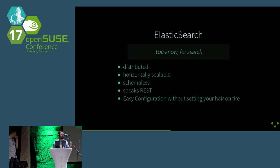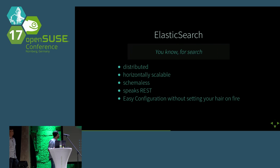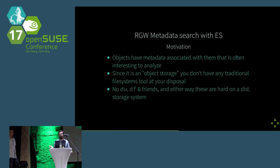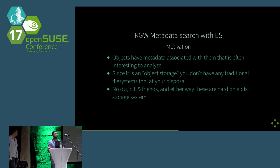As far as Elasticsearch is concerned — as the tagline says — it's a search engine that is distributed, horizontally scalable, schema-less, and has a very nice REST API. The configuration is really easy and you can do everything via the REST API. The motivation for Rados Gateway metadata search: objects always have metadata associated with them — most basically the size, mtime, atime — and you also have custom metadata like file system extended attributes. Since it's object storage, you don't have standard file system tools like DU or DF available.